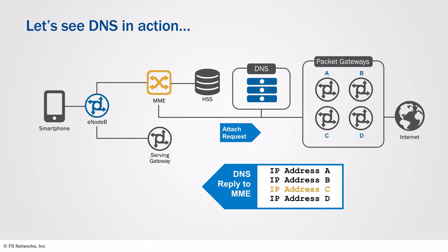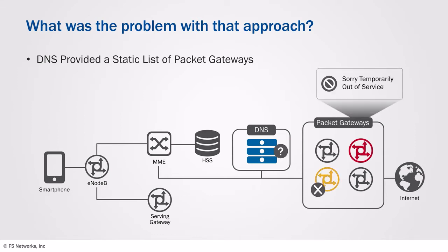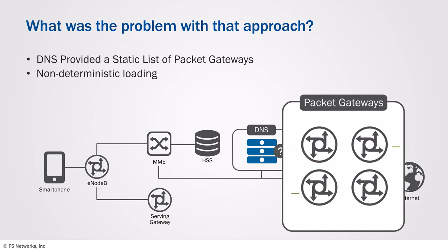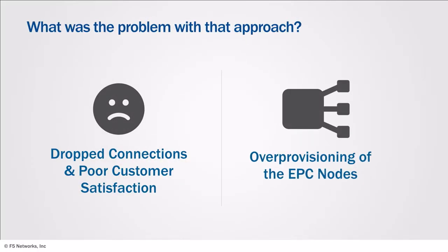So what's the problem with that approach? It doesn't consider whether the node that the answer represents is available. It might be out of service or have failed. In addition, since the answers are static, they can't consider the network loads, resulting in uneven network loading and a suboptimal subscriber experience. All of this leads to a poor customer experience and higher CAPEX and OPEX.